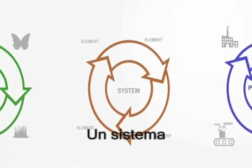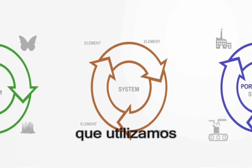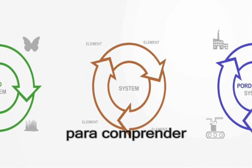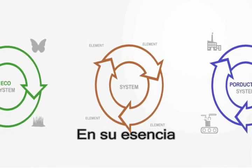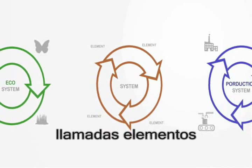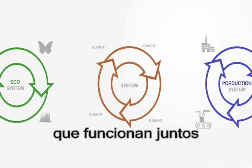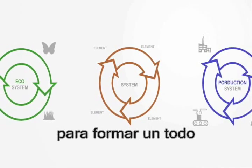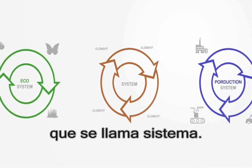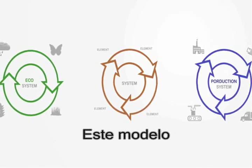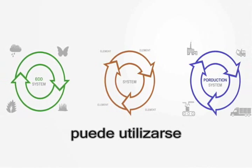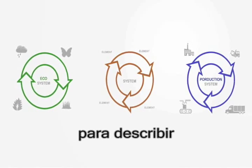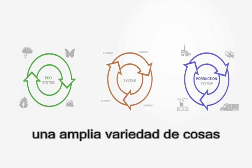A system is a type of model we use to understand the world around us. In its essence, it is a group of parts called elements that function together to form a whole that is called the system. This very simple and abstract model can be used to describe a wide variety of things.